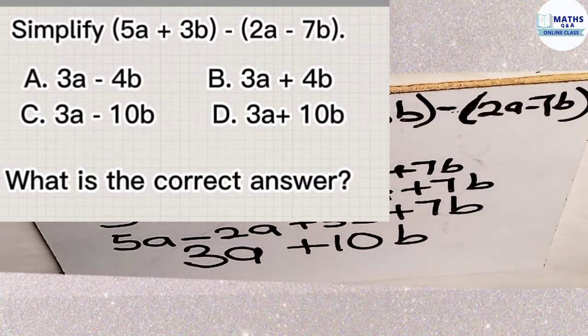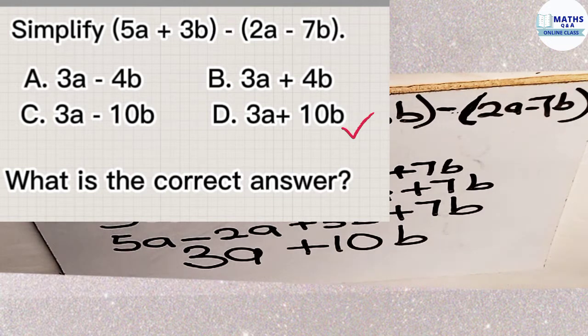So go through the options given to you. Which one do you think is correct? The correct answer is D, which is 3a plus 10b.